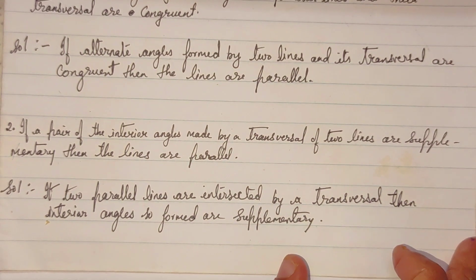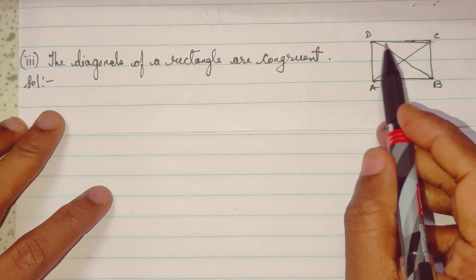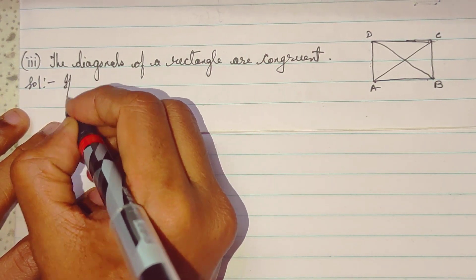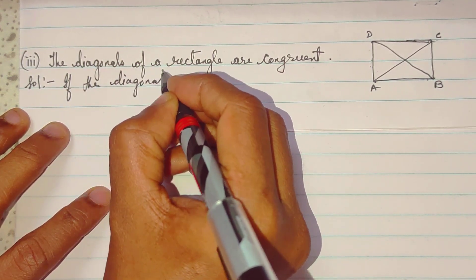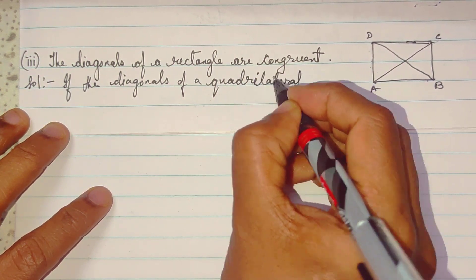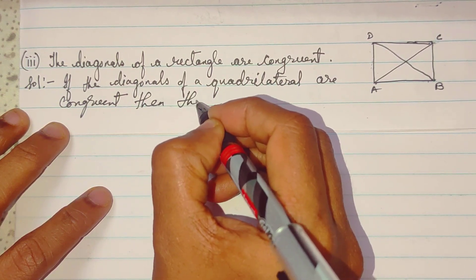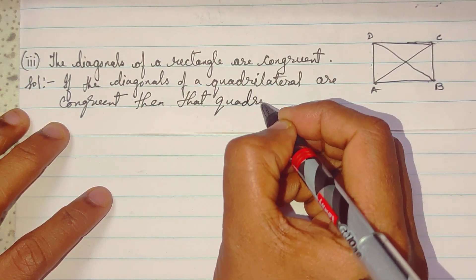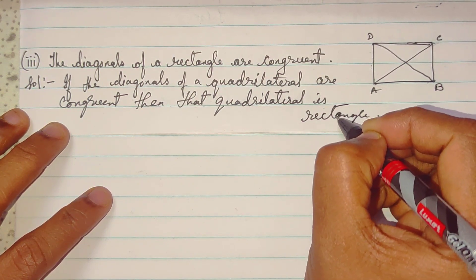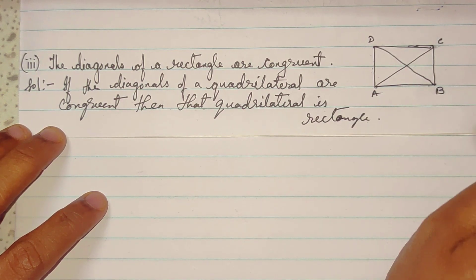This is the reverse form. Third one: 'The diagonals of a rectangle are congruent.' Its converse: if the diagonals of a quadrilateral are congruent, then that quadrilateral is a rectangle. Here we come to the end of Practice Set 1.3. If you like the video, please like, share, and comment.